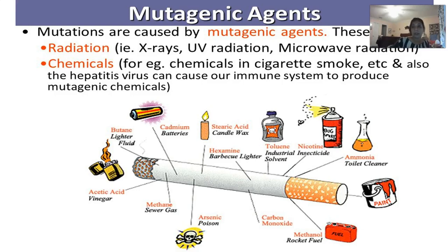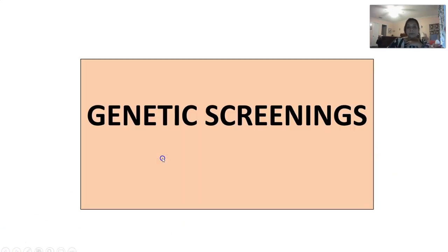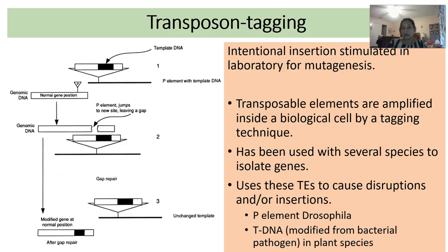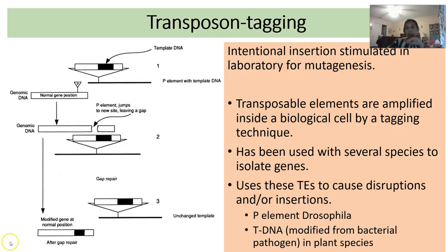Before we go into genetic screening, I'm going to stop this lecture here so you have a clean break. In the next part I will post, I'll talk about genetic screenings — how do we actually look for these transposable elements and mutations, how do we find out what to do with them, how do we use them to our advantage as geneticists, and how do we use them to isolate and sequence unknown DNA fragments. That's going to be Part 2 of this lecture.